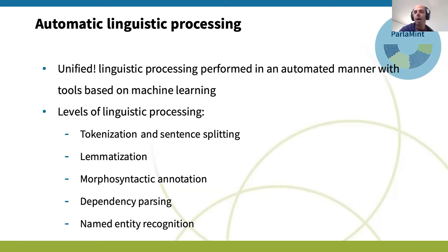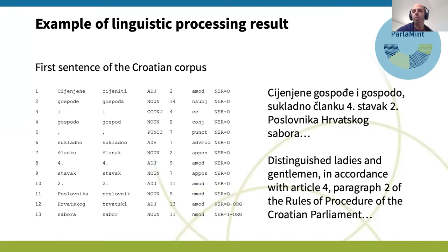I have prepared some examples of this linguistic annotation, since not everybody may be well acquainted with it. From the Croatian corpus, the first sentence, automatically translated, says: 'the distinguished ladies and gentlemen, in accordance with article four, paragraph two of the rules of procedure of the Croatian parliament.' If this Croatian text is processed, this is its output.